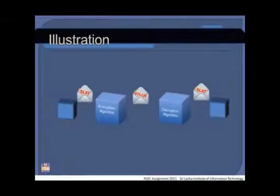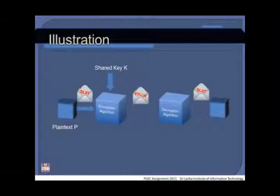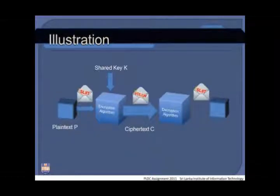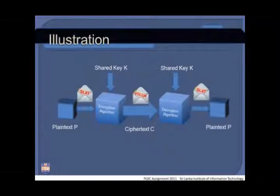As an illustration, suppose the sender wants to send the message 'SLIIT.' The message SLIIT is encrypted using an encryption algorithm and a shared key, producing the encrypted output 'VOLLW,' which has no meaning. This encrypted message is transferred via the channel. At the receiver end, it is decrypted using the decryption algorithm and the shared key, converting it back to 'SLIIT.'